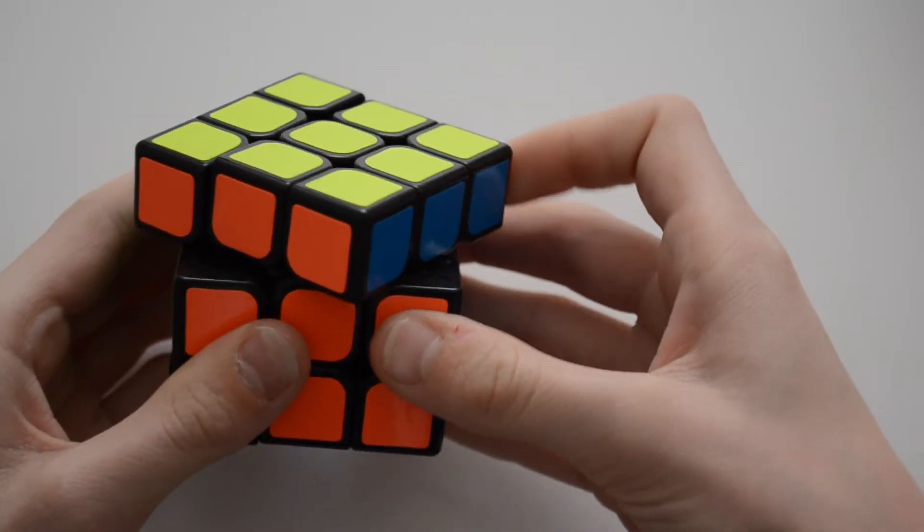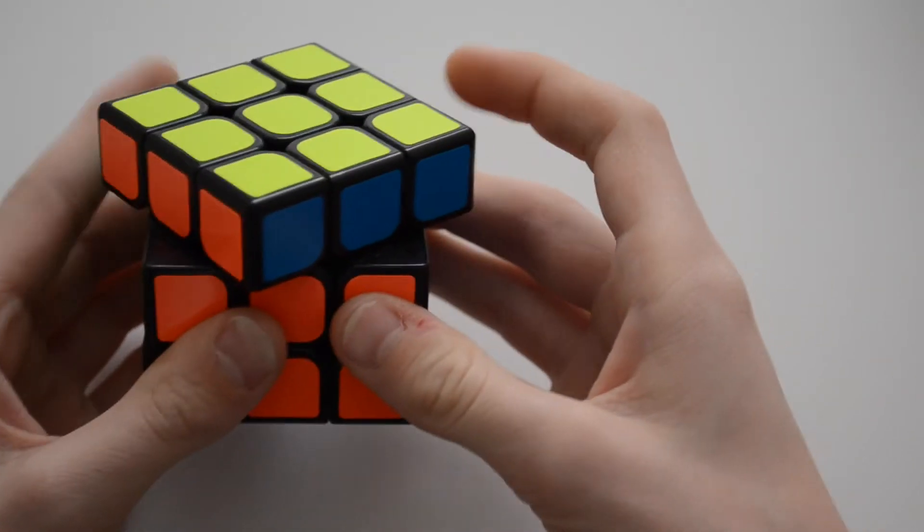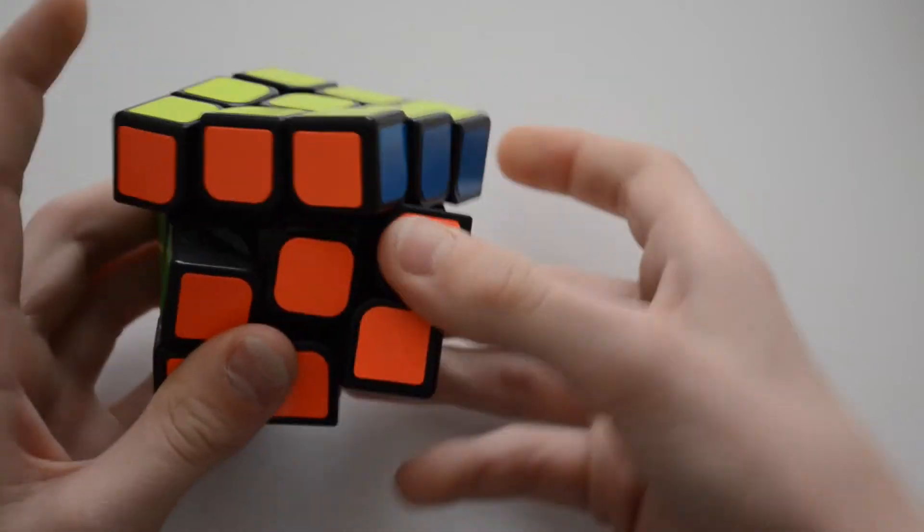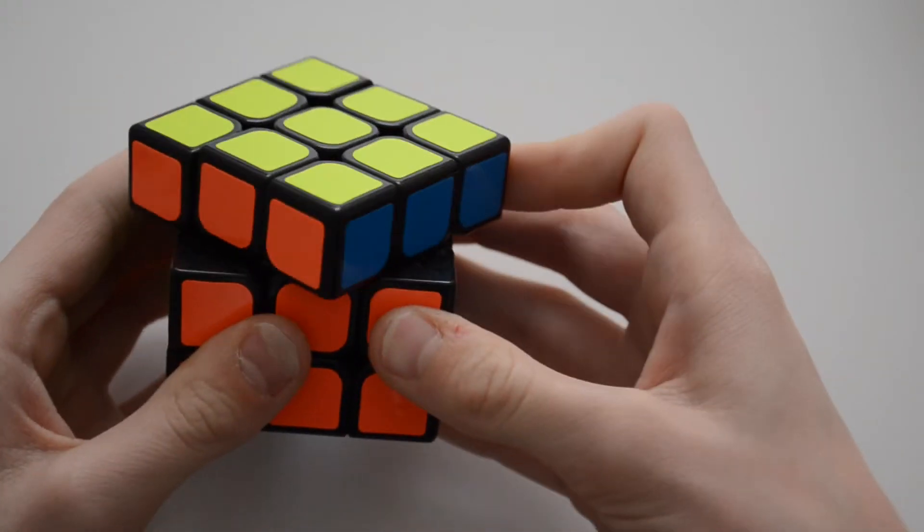Corner cutting is easily 45 degrees. Lockups on this puzzle do occur but have never been a problem for me. For pops, I've only had a couple so that's not really a problem.